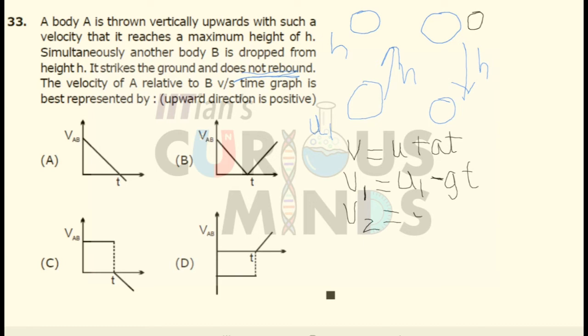So now relative velocity, they have given the relative velocity. The velocity of A relative to that of B, that is v1 minus v2 is equal to, I will subtract both of them, I will get the answer u1.